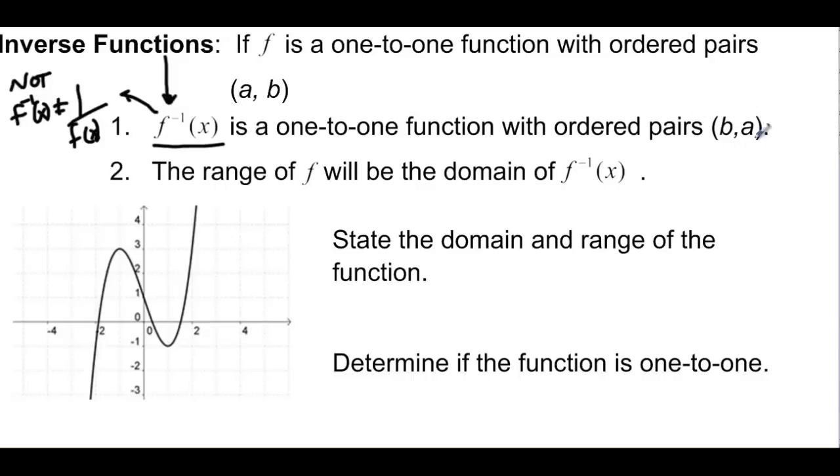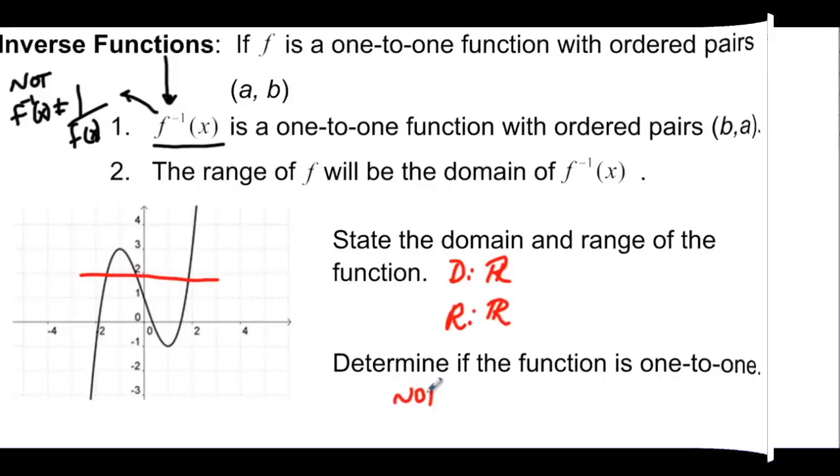So it asks us to find the domain and range of this function. Well, the domain is going out forever in both directions, left and right. So the domain is going to be all reals. And the range is also going down forever and up forever, so it is also all reals. Then it says determine if the function is one-to-one. Well, if we do our horizontal line test, we can say that it is not one-to-one.